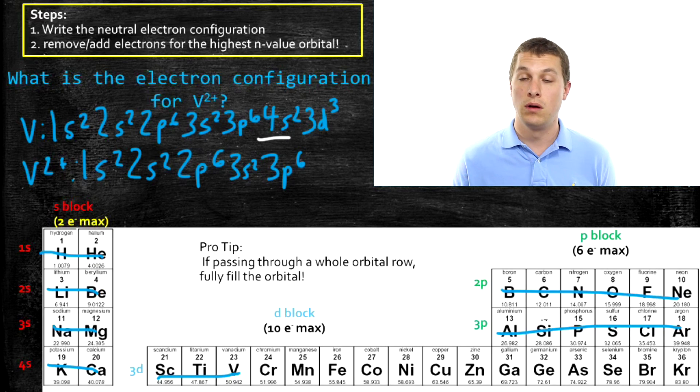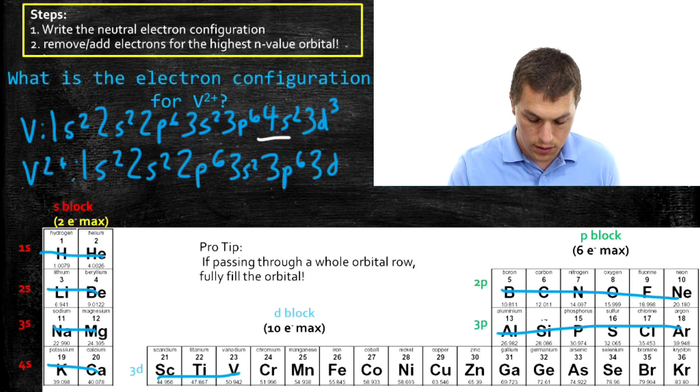And now we could write 4S0, but then it would just be a placeholder. There's no electrons there, so we just write 3D3.